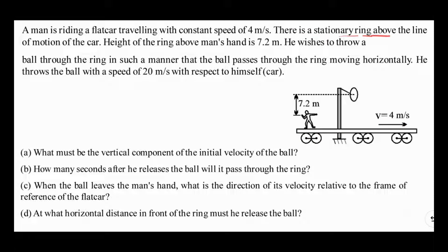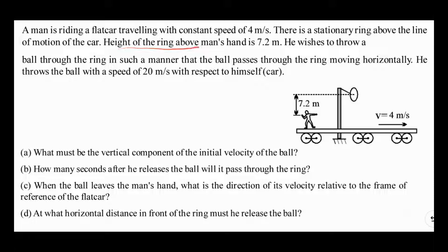There is a stationary ring above the line of motion of the car. The car is moving along a horizontal surface, and there is a stationary ring mounted over a pole which is fixed to the ground — so this ring is fixed. The height of the ring above the man's hand is 7.2 meters.